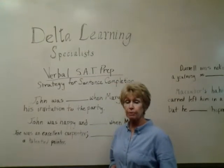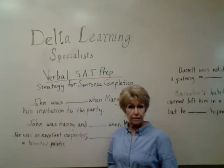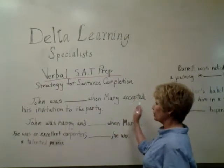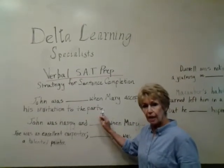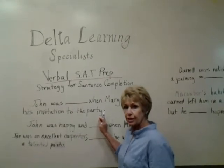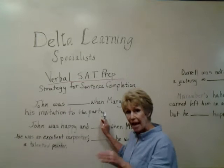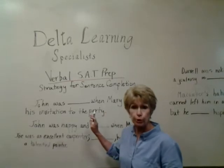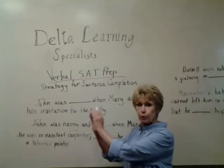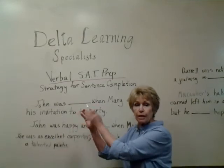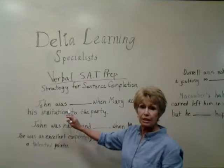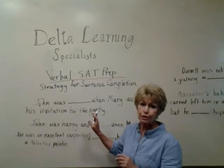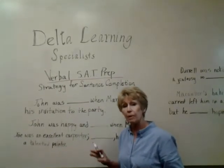Sentence completion refers to a sentence that has either one or two blanks in it. For example: 'John was blank when Mary accepted his invitation to the party.' Think of every word in each sentence as a pearl on a string — each one is matched and is there for a reason. The same is true of these words; they are there to give you clues, like arrows or blue lights on a runway that lead you to a certain conclusion. My examples will be simple because I want you to understand the strategy. Unfortunately, the actual sentences on the SAT will be more complex.